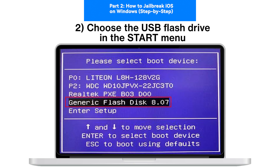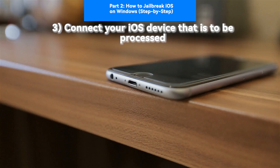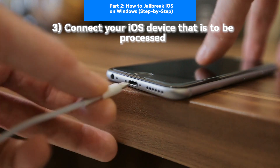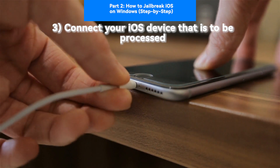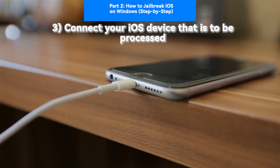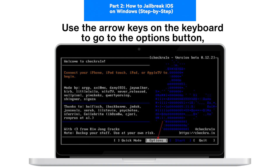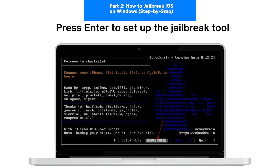Choose the USB flash drive in the Start menu. Following this, connect your iOS device that is to be processed. Use the arrow keys on the keyboard to go to the Options button. Press Enter to set up the jailbreak tool.